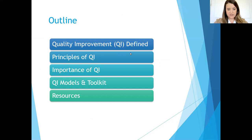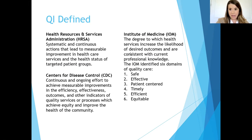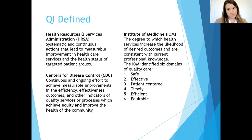I'll give a brief intro to QI, talk about some definitions, key principles to keep in mind, why it is important to do quality work, a brief overview of some QI models and the QI toolkit, and close out with some electronic resources. The Health Resources and Services Administration defines quality improvement as systematic and continuous actions that lead to measurable improvement in healthcare services and the health status of targeted patient groups. The CDC expands that to include continuous and ongoing effort to achieve measurable improvements in efficiency, effectiveness, outcomes, and other indicators of quality services which achieve equity and improve the health of community. I like that they bring in the equity element and broadening that to include health of communities.